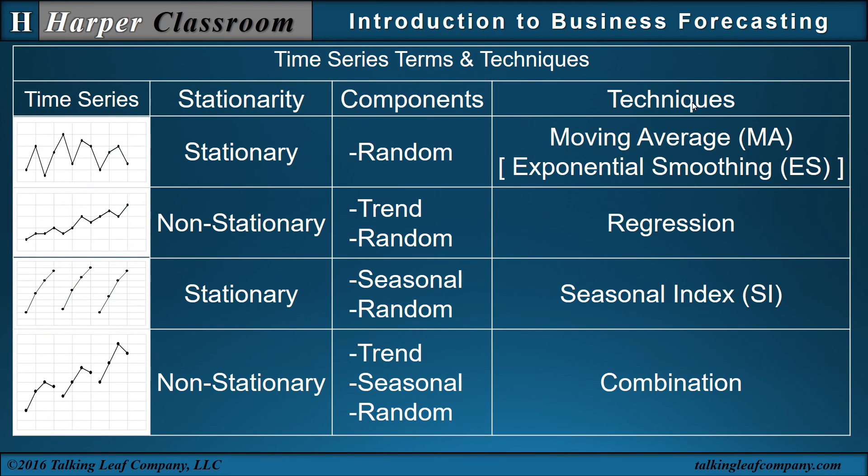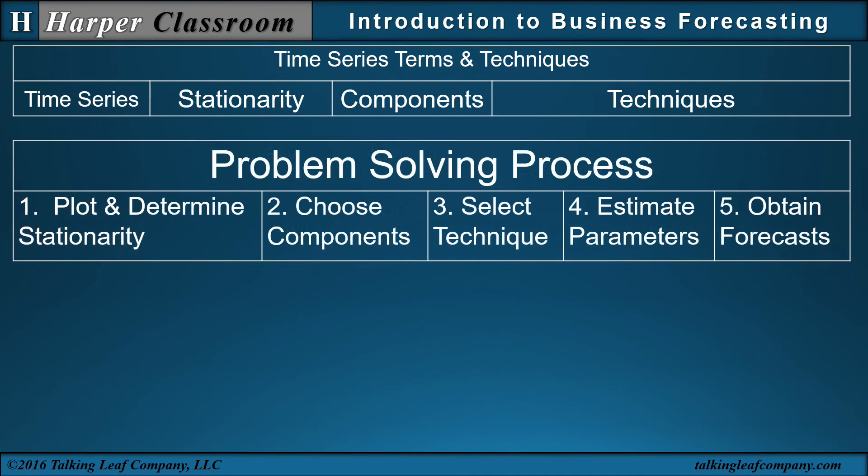So when we look at these four time series in subsequent videos, we'll go much deeper into the techniques, the definition of components, and stationarity. As we go deeper, I'll define a structure, a five-step problem-solving process that will go through step-by-step to define stationarity, to choose your components which is cause of variability, then select your technique. And once you have your technique, you estimate the parameters within that technique, and then obtain your forecast.